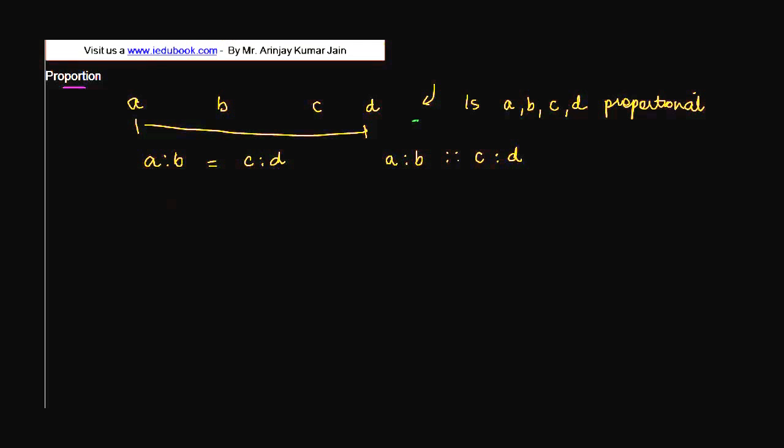In such a case the numbers A and D are known as extremes, and B and C are known as means.